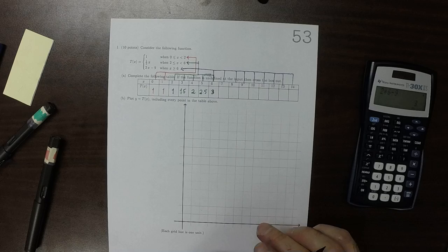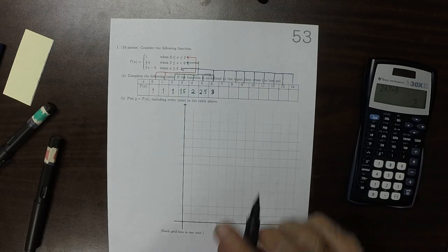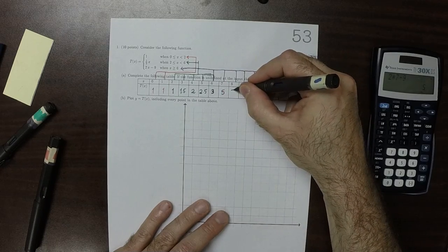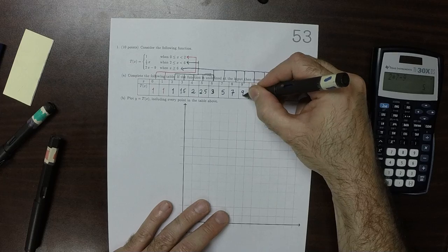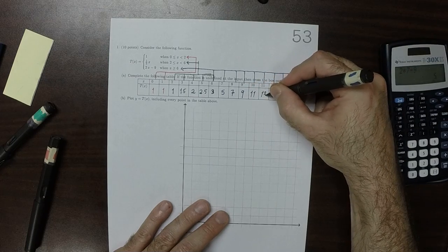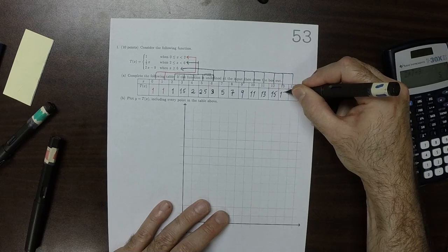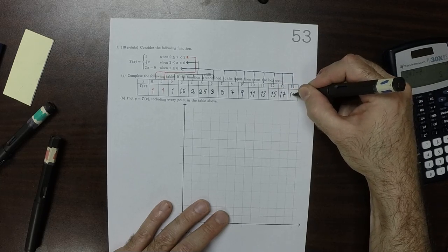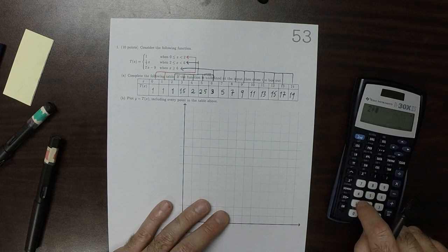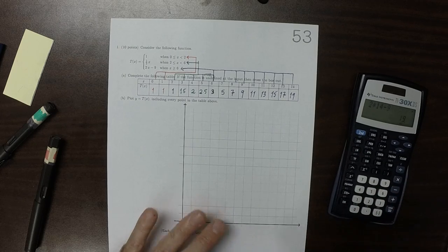Then now plugging in 7. So 2 times 7 minus 9, that would be 5. And then up by 2. So 7, 9, 11, 13, 15, 17, 19. Let's verify that last one. So 2 times 14 minus 9 - 19. Very good.